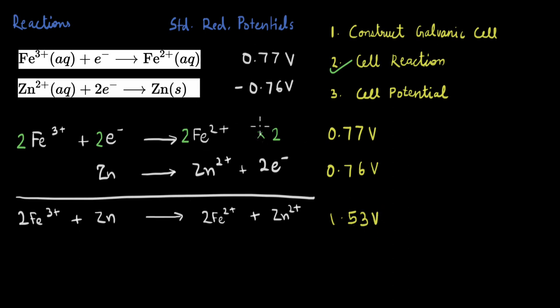Now, one common mistake here is to treat these potential values like enthalpy. So, since we multiplied this by 2 to get the cell reaction, if you also multiplied the potential by 2, you will get an incorrect answer. And the point is, for potentials, we don't multiply by this factor.